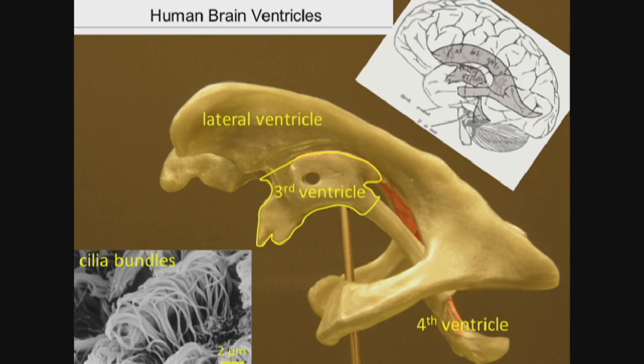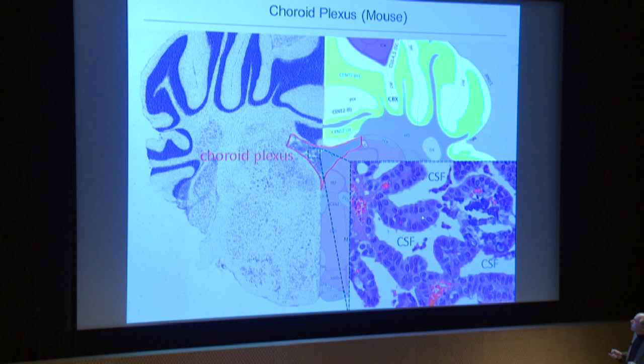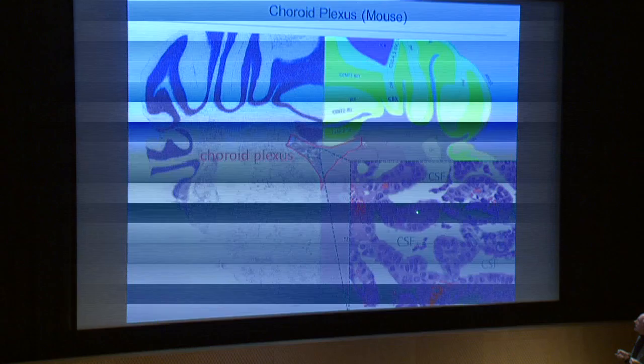This is a section through the hindbrain of a mouse showing the fourth ventricle, which is filled with tissue — the choroid plexus. This is a secretory epithelium where the cells are tightly sealed, and if you look carefully, there are blood vessels inside that bring materials from the periphery into the choroid plexus. These include solutes, metabolites, and such compounds.